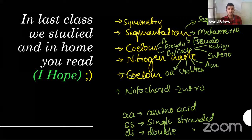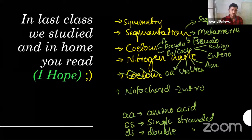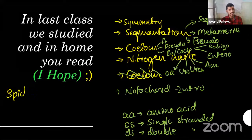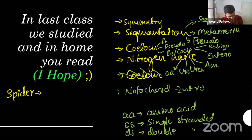These things are important — especially metameric segmentation and the coelom types; they regularly ask questions on those. There is another type of nitrogen waste I didn't mention because it's not important for the exam, but it's interesting. Everyone knows the spider, right? Spiders have a different type of nitrogen waste.